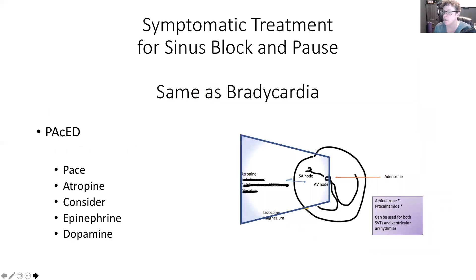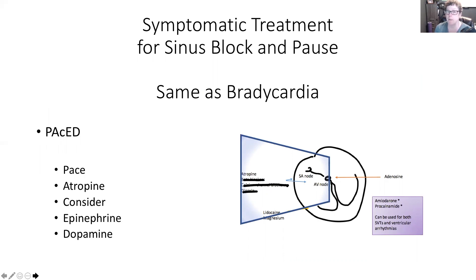We really want to identify the cause to treat it. Here's the PASTE algorithm — you'll hear this a lot through level one and level two ECG. P stands for Pace: if they're symptomatic we put electricity through them to stimulate the heart to beat more often. A stands for Atropine, the medication that will increase heart rate. S and E stand for considering epinephrine and dopamine — those alpha-1, beta-1 and beta-2 receptors that increase contractility, blood pressure, and heart rate — same as for bradycardia.